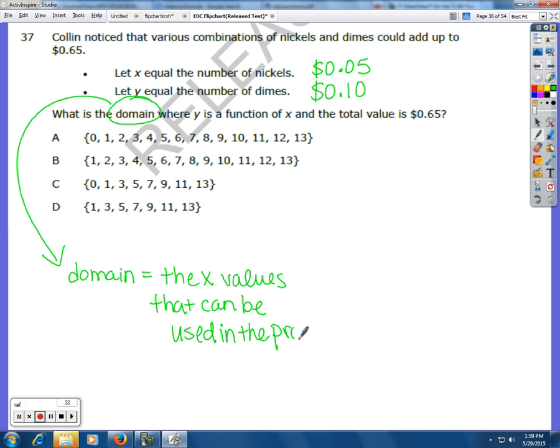And for this case, it already tells you that the X is the number of nickels. So the domain is just the possible number of nickels that you could use. So what is the domain where Y is a function of X and the total value is 65 cents? So here's the thing. It's 5 cents for every nickel plus 10 cents for every dime, and that has to equal 65 cents.